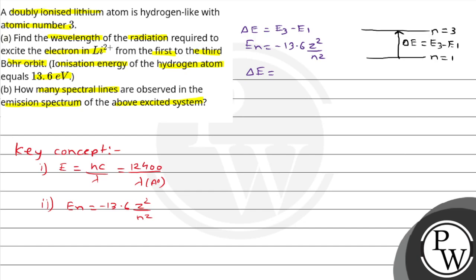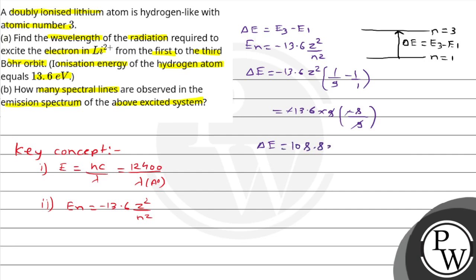ΔE = E3 − E1 = −13.6 × Z² × (1/9 − 1/1)। Z का value 3 दिया है, तो Z² = 9। तो ΔE = −13.6 × 9 × (1/9 − 1) = −13.6 × 9 × (−8/9)। Minus-minus cancel होगा और 9-9 cancel होगा, तो ΔE = 13.6 × 8 = 108.8 electron volt।